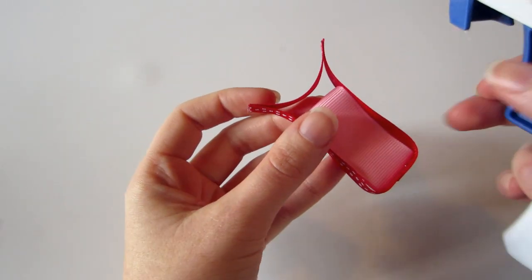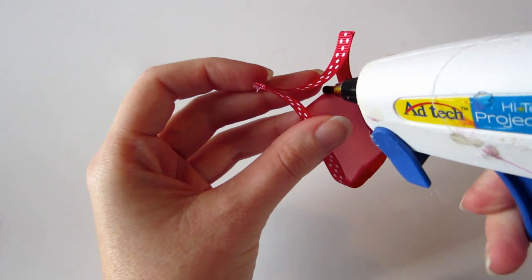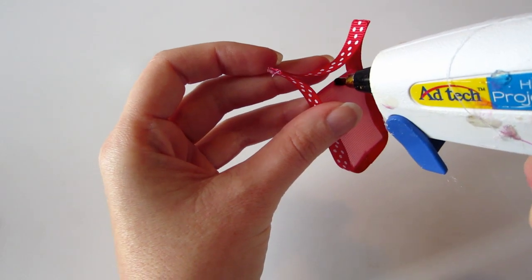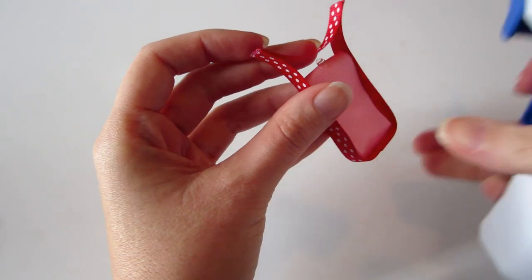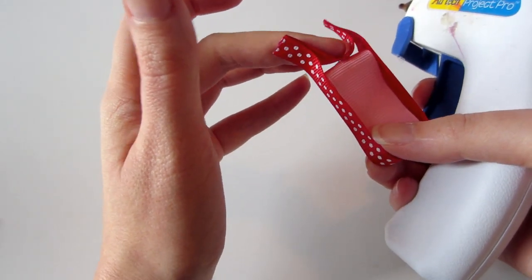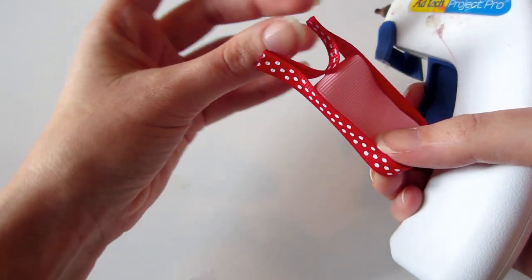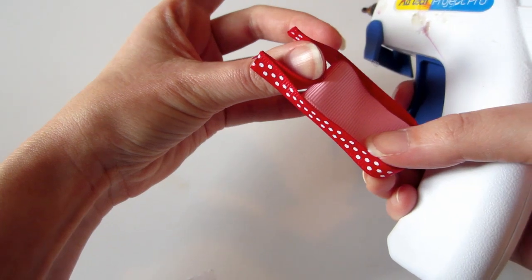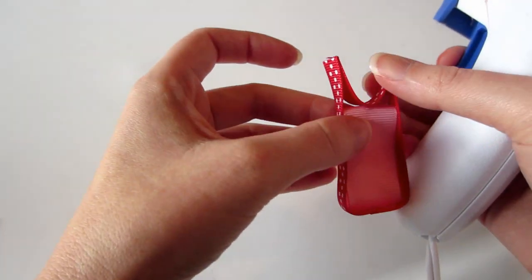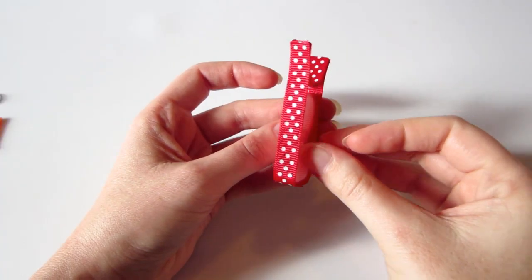Now if you want to, you can add just a little bit of glue right here in the middle of the top and you can bring the middle of your ears down just so it touches that base. Not necessary, but if you want a more pointy ear, this is what you need to do.